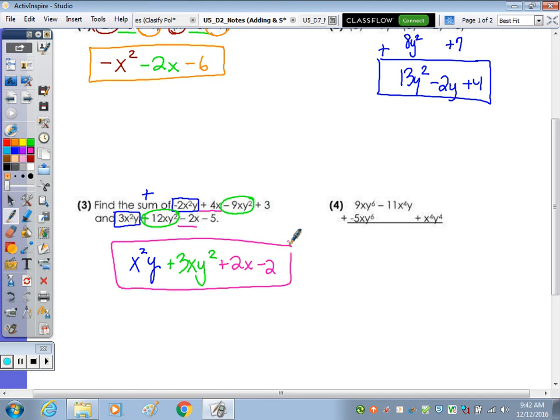And then 4 is already stacked. 9 plus a negative 5 would be a positive 4 xy to the 6th, bring it down, negative 11x to the 4th y, and then plus x to the 4th y to the 4th.